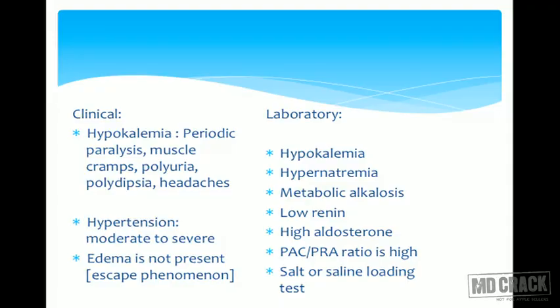Laboratory evaluation shows metabolic alkalosis, low renin, and high aldosterone — elevated aldosterone-to-renin ratio. In contrast, bilateral or unilateral renal artery stenosis causes high-renin hypertension. In primary hyperaldosteronism, aldosterone production is independent of renin, so aldosterone is high and there is negative feedback suppressing renin, giving low renin and high aldosterone.